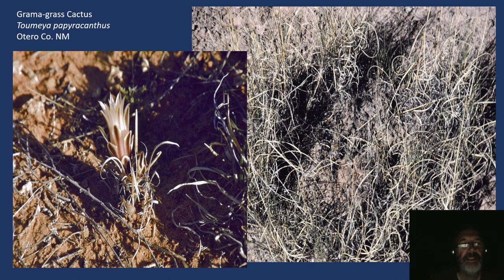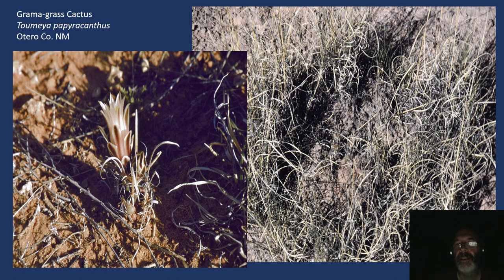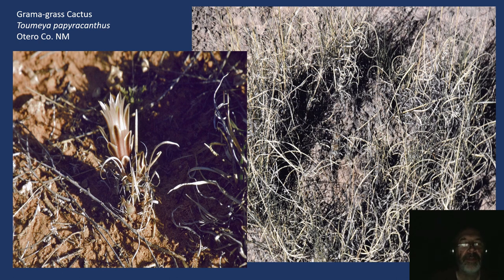On the left, you can see the grama grass cactus in bloom quite clearly. These wonderful central spines look just like the blades of tobosa grass. On the right, the large picture, you can see a ring of grass, and right in the center of that ring there are three plants — one, two, and three. They're really nice little cacti, hard to find, not rare, just extremely cryptic. One of my favorites. I was first introduced to this cactus as a teenager living up in Albuquerque, when I found one out in the grasslands. It really sparked my interest in cactus.